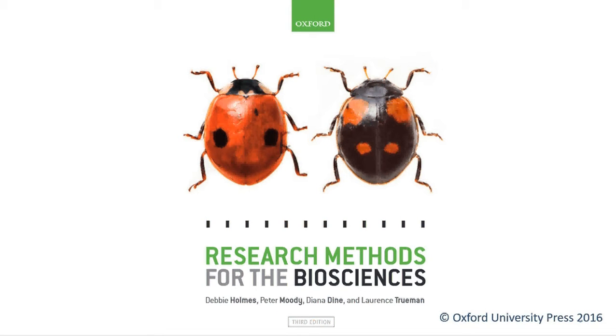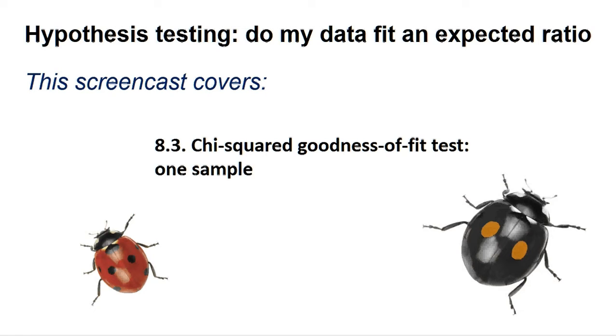Hello, welcome to another Research Methods for the Biosciences screencast for R. This screencast covers section 8.3: chi-squared goodness-of-fit test for one sample.